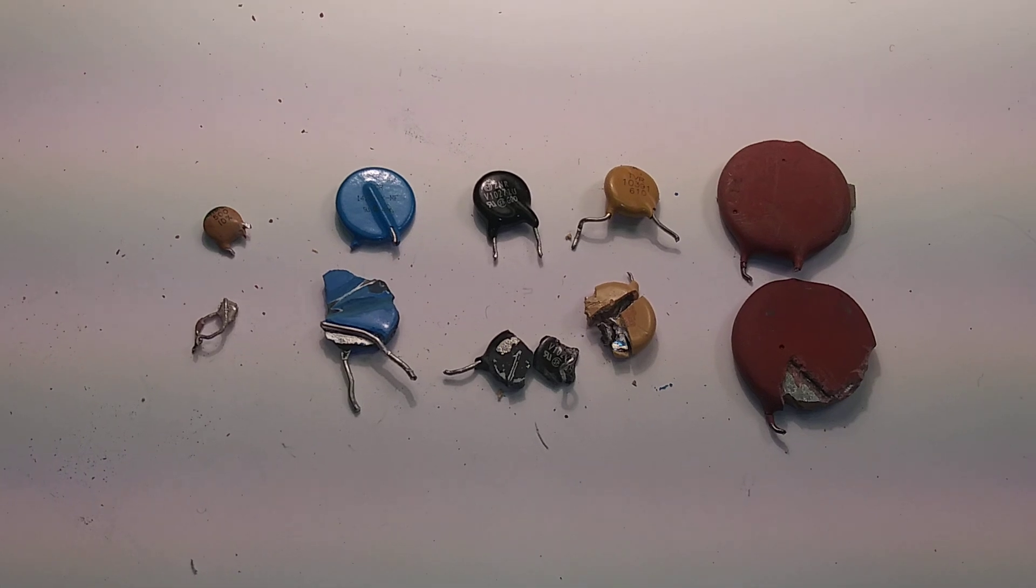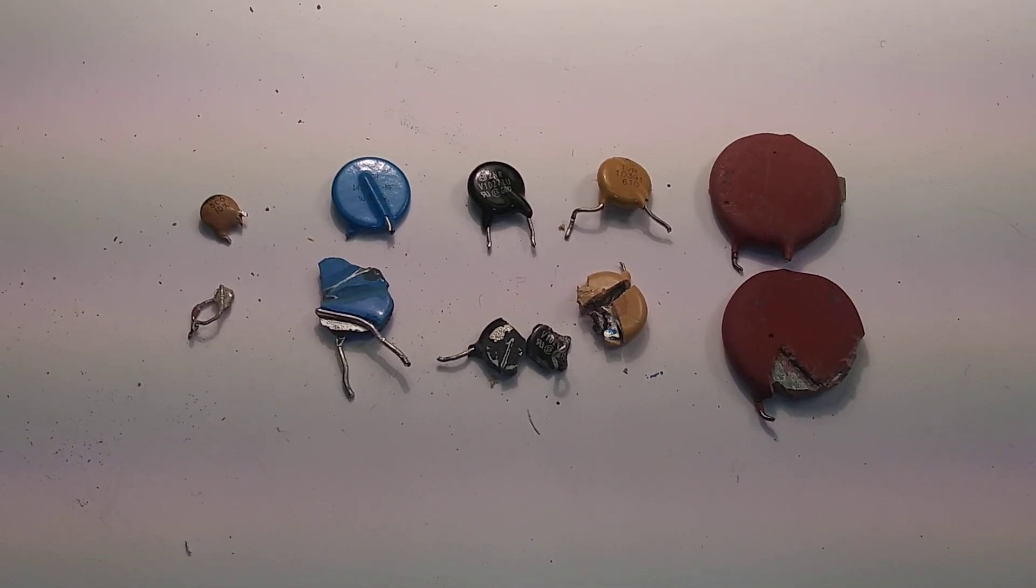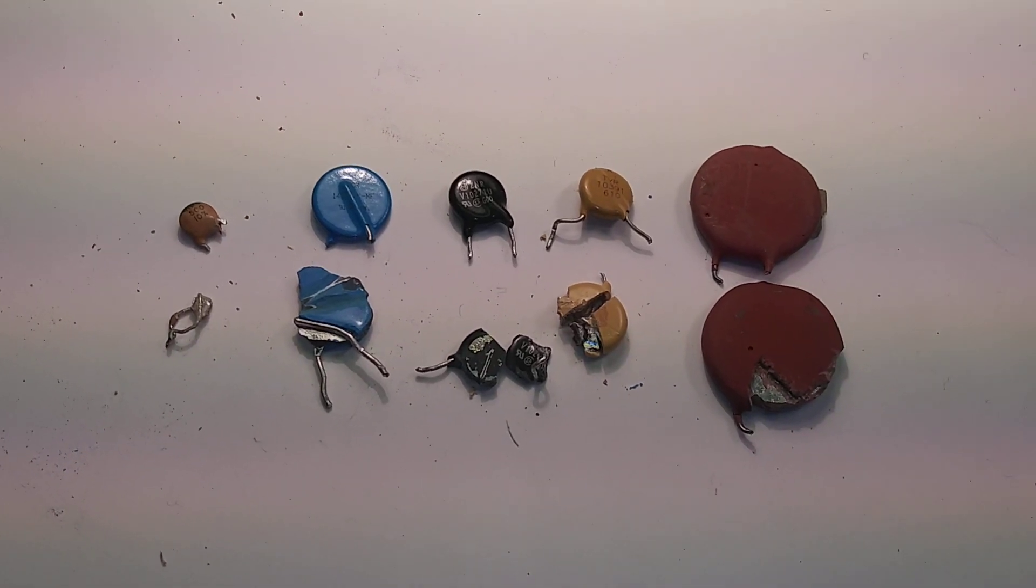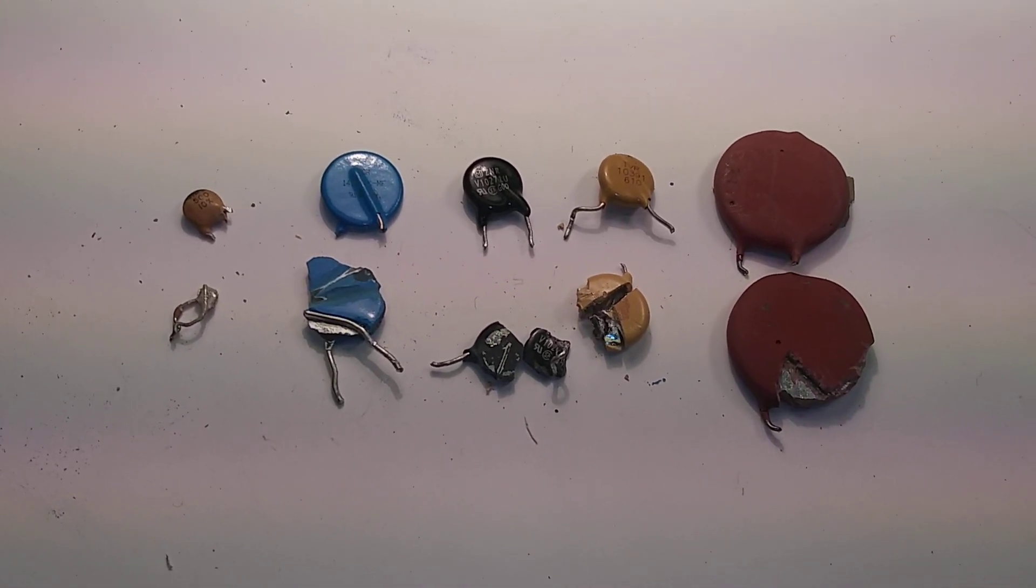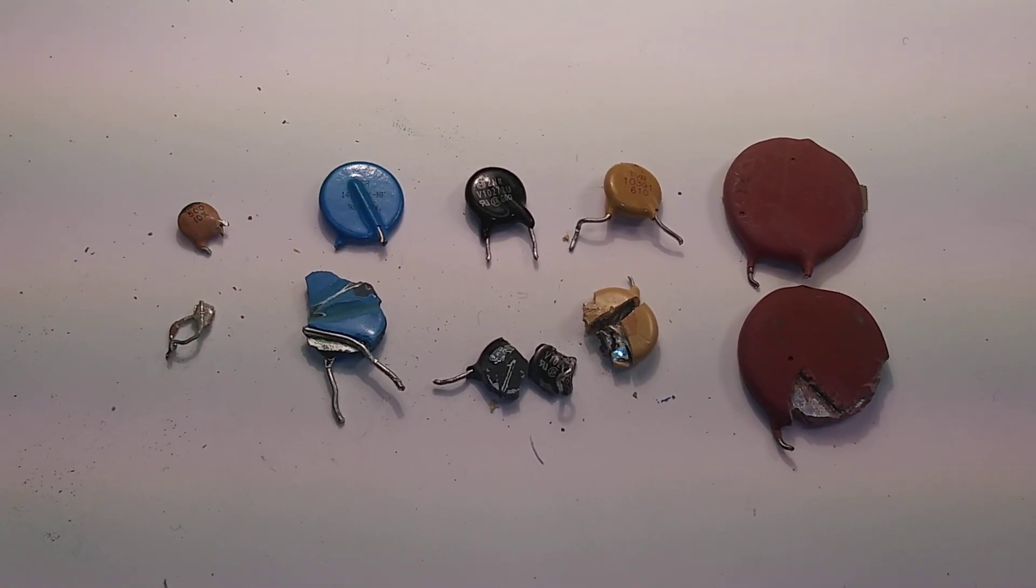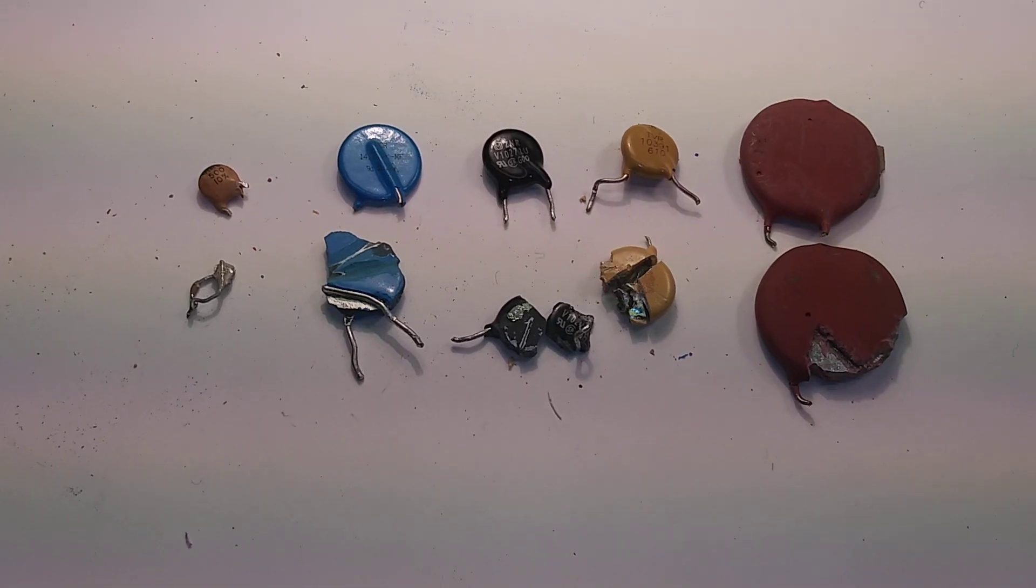I've seen some videos where folks think there's gold or silver in particular components, but in reality there isn't. However, with ceramic capacitors, there's a really good chance that there is silver inside. I don't know how much the yields are, but I do know there is silver in these capacitors. I want to go through a couple of them I've collected over the years.